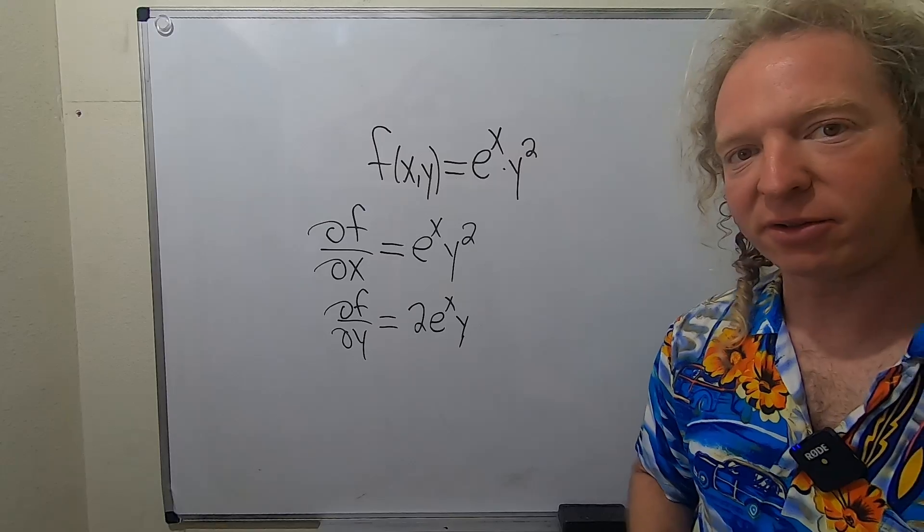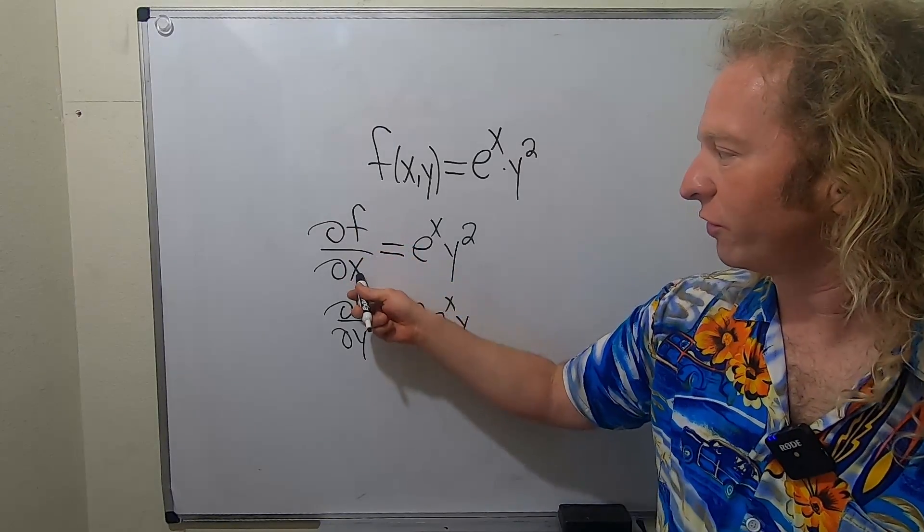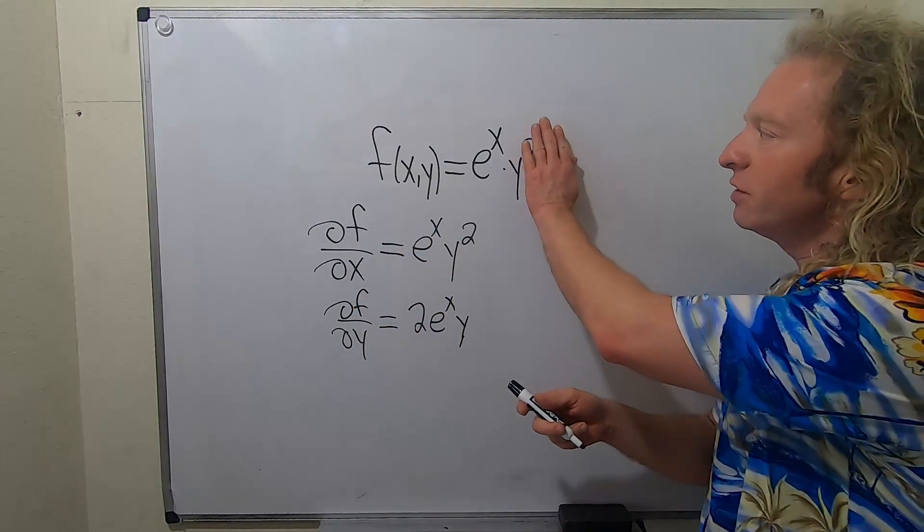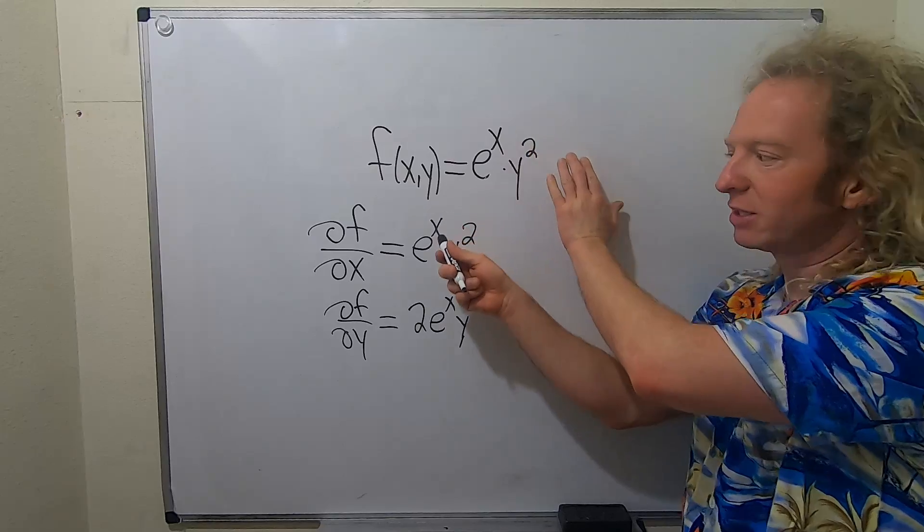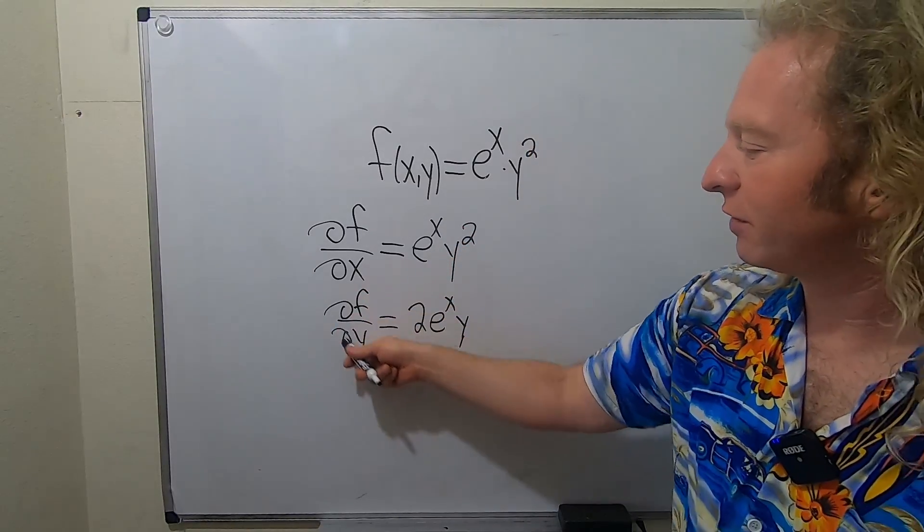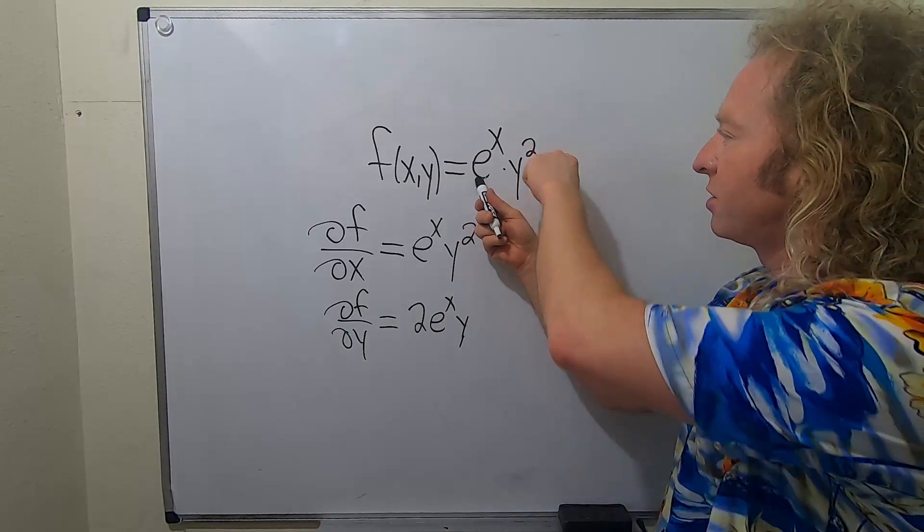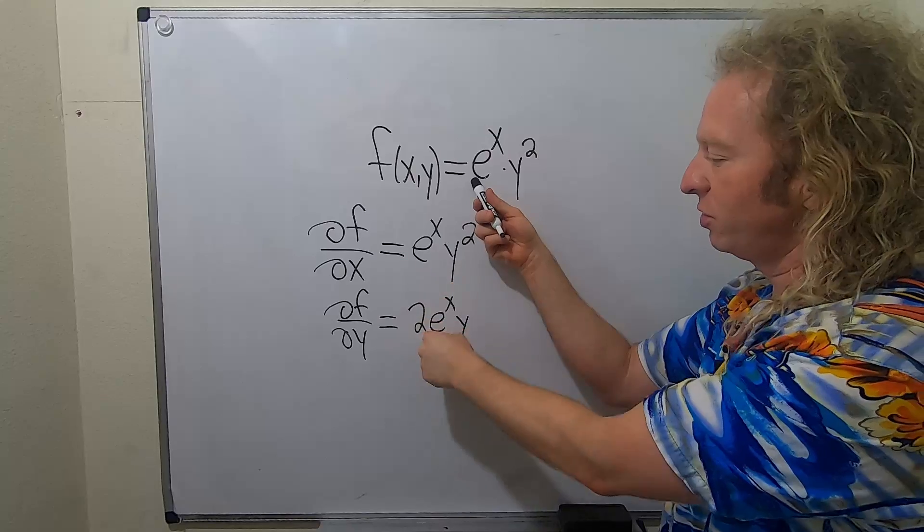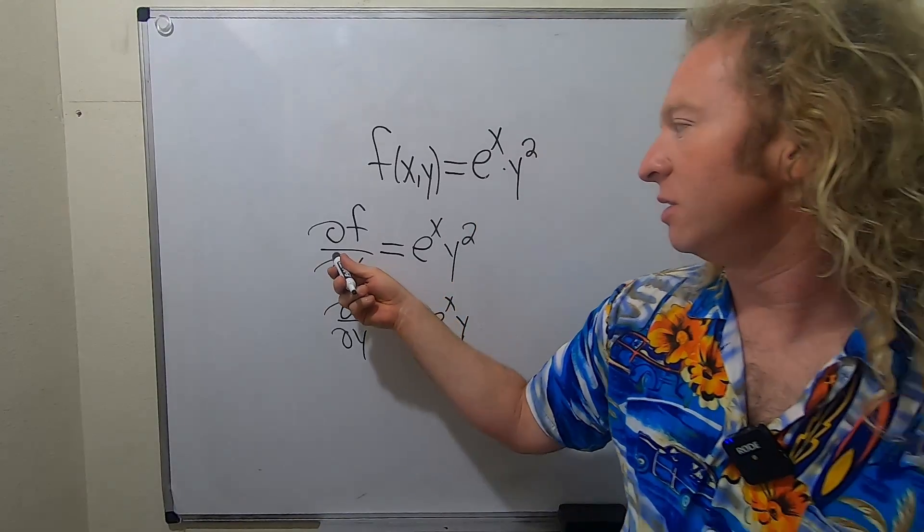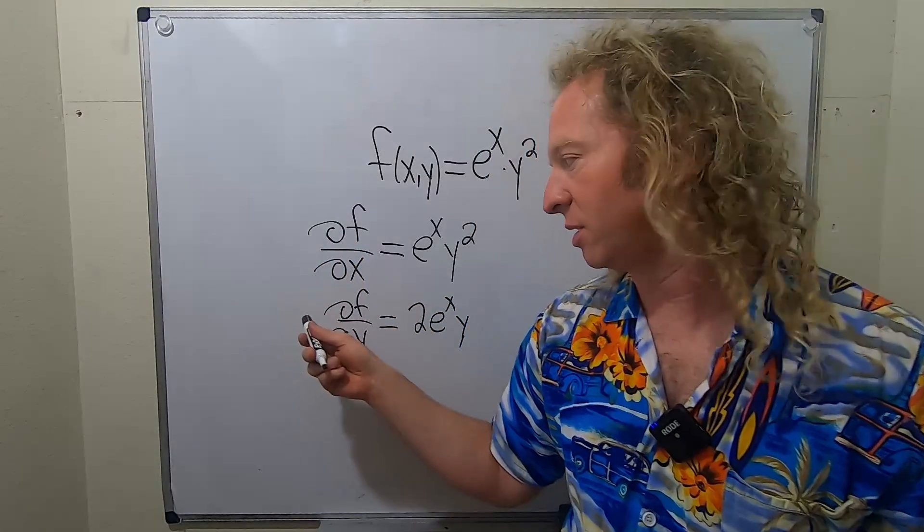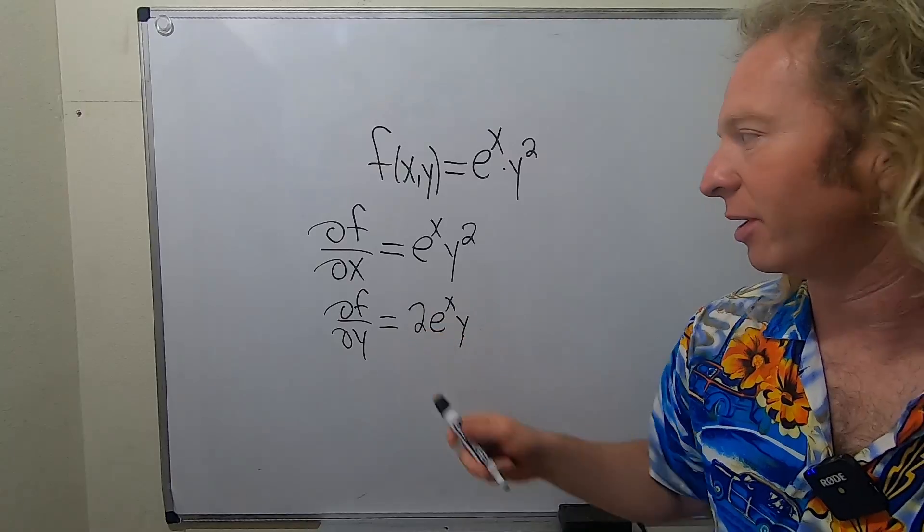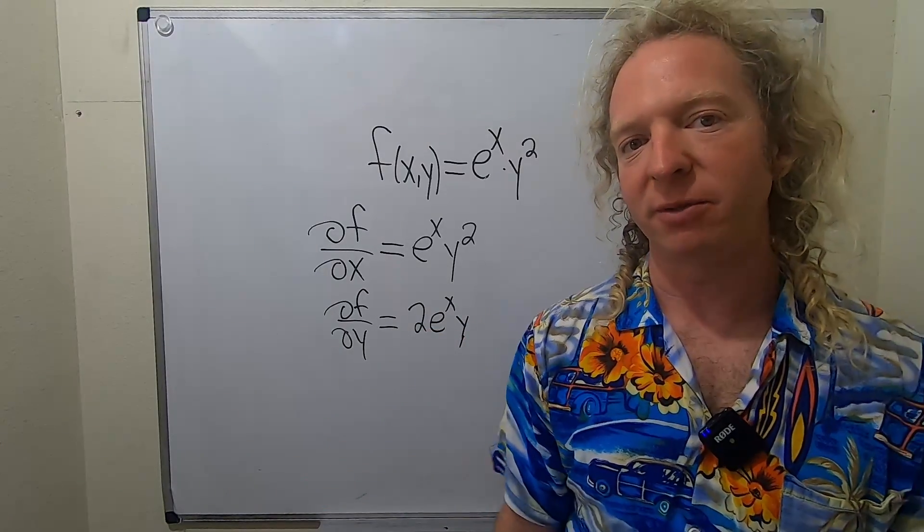And that is the final answer. So again, the partial derivative with respect to x, this is a constant. The derivative of e to the x is e to the x. The partial derivative with respect to y, now this is a constant, so you just get 2y and that hangs out. This is the rate of change in the x direction. This is the rate of change in the y direction. I hope this video has been helpful. Take care.